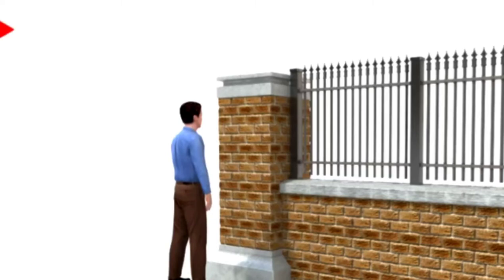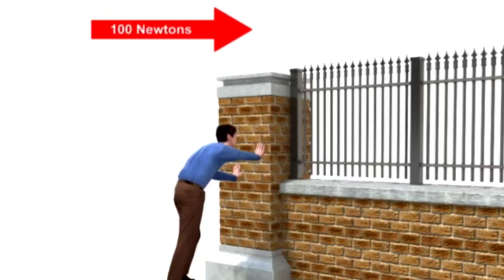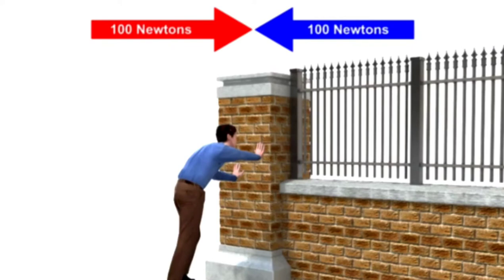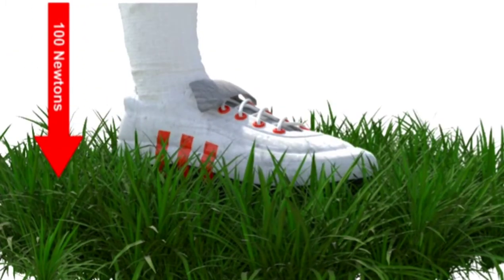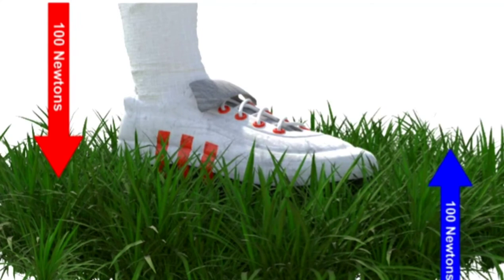When you exert a force against a wall, the wall pushes back with an equal force, but in the opposite direction. When you take a step and push your foot down against the floor, the floor exerts a force back up to your foot. Every action of force has an equal but opposite reaction.